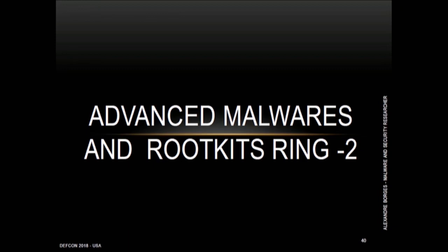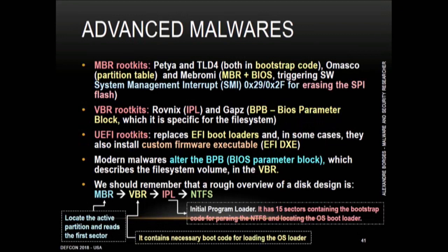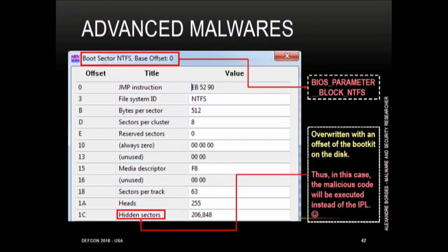Now I'm talking about advanced malware — basically rootkits Ring Minus Two. Most malware acting at this level attack the MBR, VBR, and UEFI, for example. Some malware alter the BPB — BIOS Parameter Block — to change the execution flow to another place. In this case, this kind of malware uses the Hidden Sectors field to redirect to another address and execute malicious code instead of the IPL.